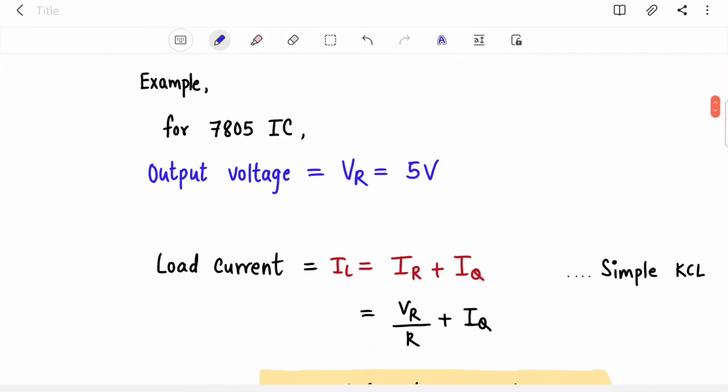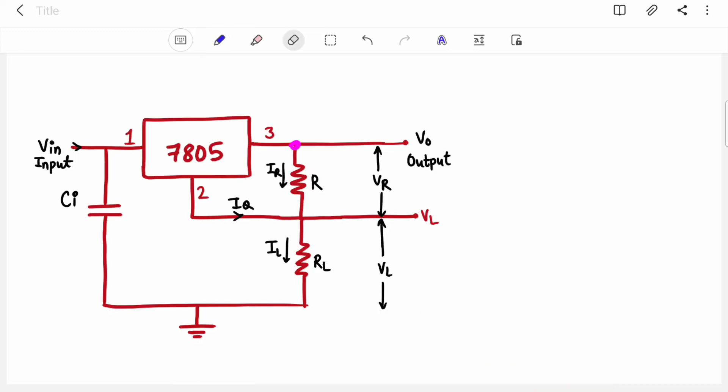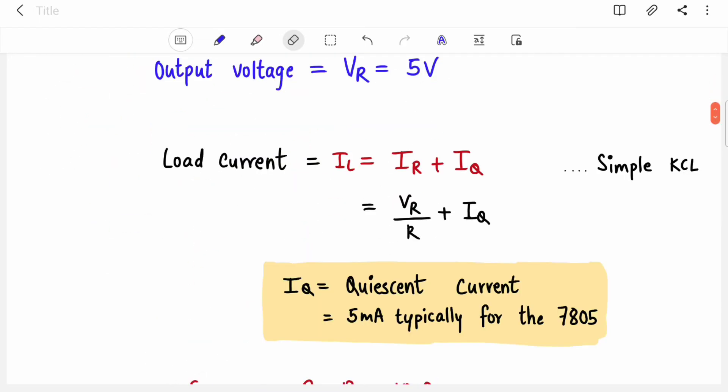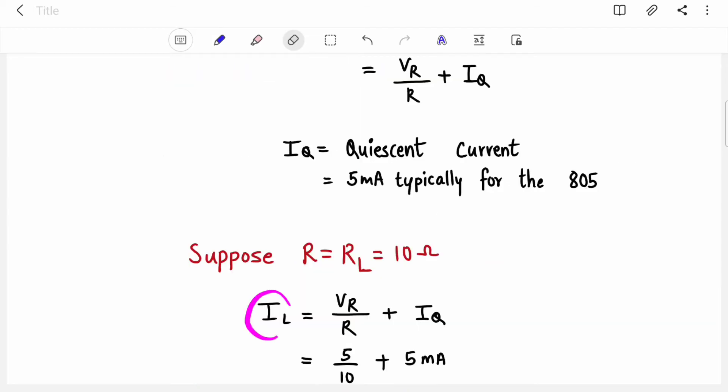So let's take an example. Let's take some numbers and try to fill up these equations. So as I said, VR is 5 volt. Voltage at this point is 5 volt. So voltage across this resistor is 5 volt. Equation for IL where we substituted VR upon R for IR. Now I told you IQ is quiescent current which is 5 milliampere for 7805. Now here we are trying to find out value of IL. So we need to assume value of this resistor and load resistor as well.